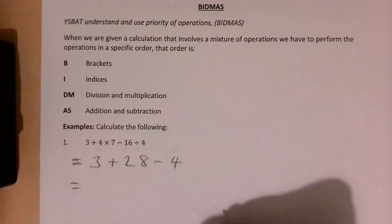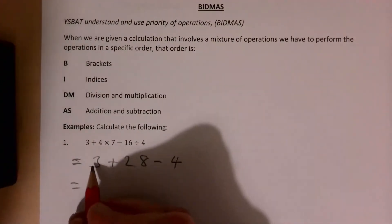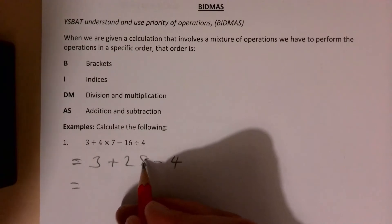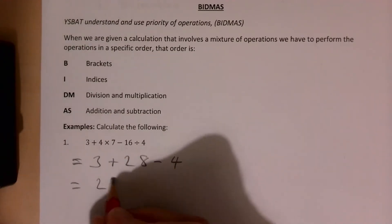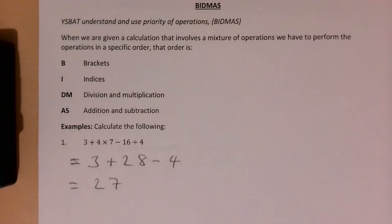Finally we do our addition and subtraction. 3 plus 28 is 31, take away 4 gives me 27. So that's my answer then for that one.